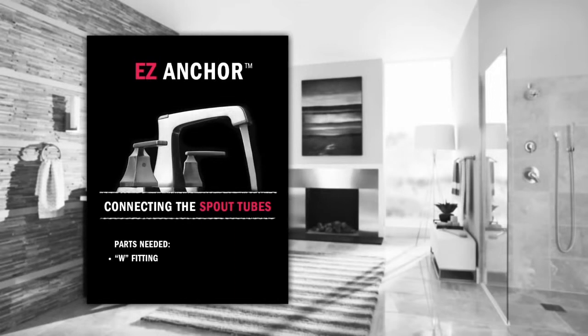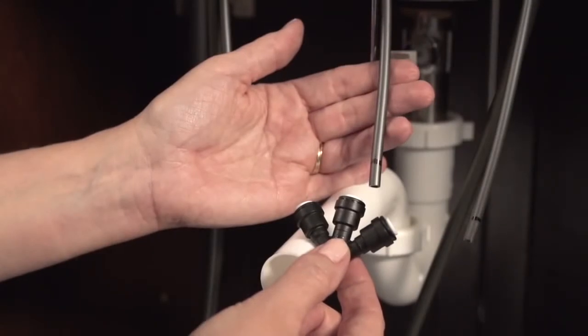Now let's move under the sink to connect all of the tubes. First, find the W fitting from the plastic bag. Using the push fit connection, insert the tube hanging from the bottom of your spout into the center of the W fitting.